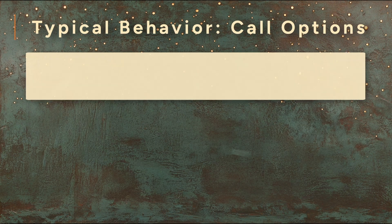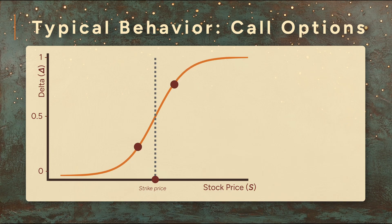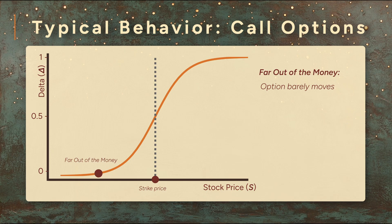Let's first explore delta for call options. We'll start at the extremes and then meet in the middle. Consider a call that's way out of the money. The stock price is so far below the strike that there's virtually no chance the option will be worth anything at expiration. If the stock goes up a dollar, that's not enough to make a worthless option suddenly valuable. It was basically worth zero before, basically worth zero after. So the delta is about zero.